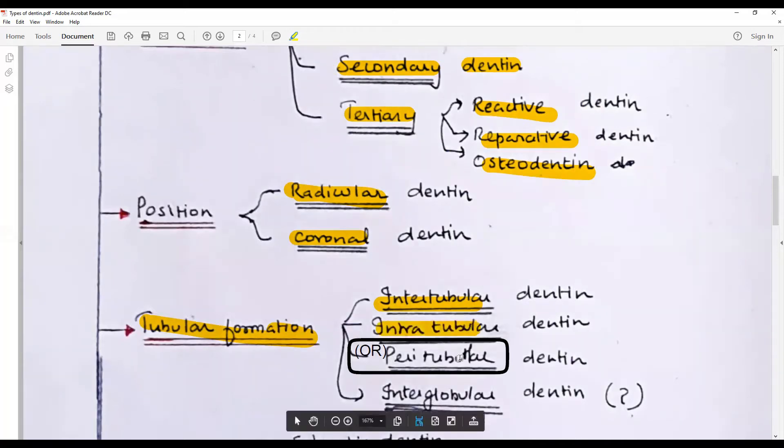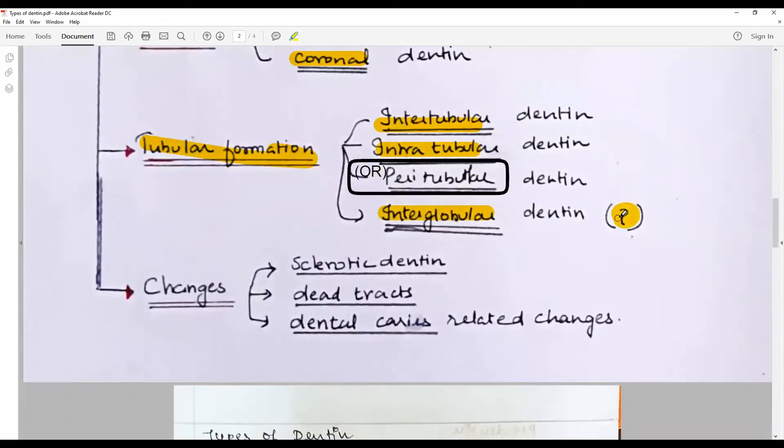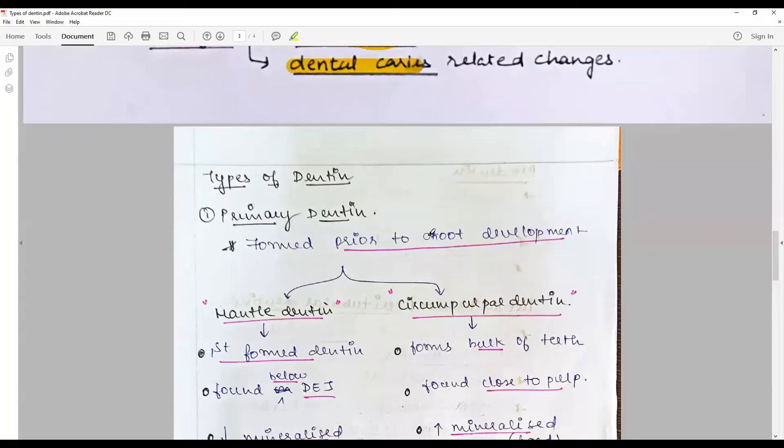Then they have interglobular dentin. This question, not a type but a calcification abnormality. Then you have, depending upon the age changes, sclerotic dentin, dead tracks, dental caries related transparent dentin, etc.